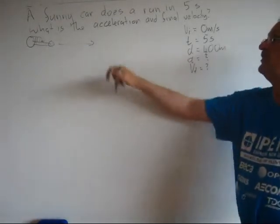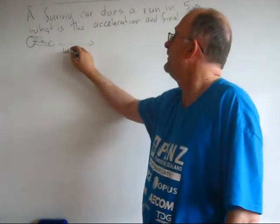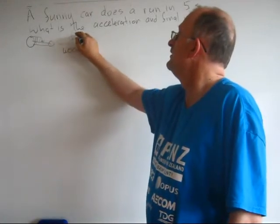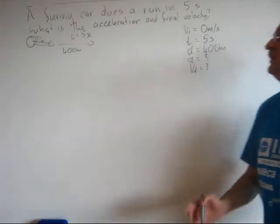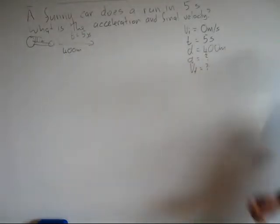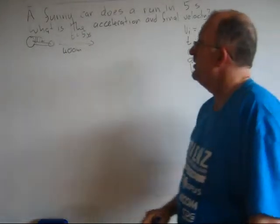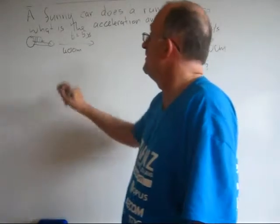So step 1: Draw a picture. 400 meters. Step 2: Write down what you know. Step 3: Choose an equation. Because I've done this before, d is equal to vi t plus half at squared.